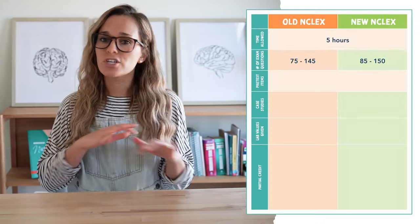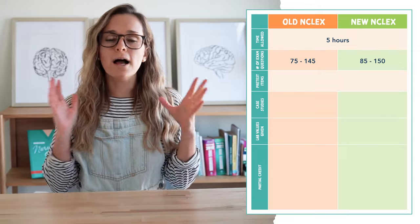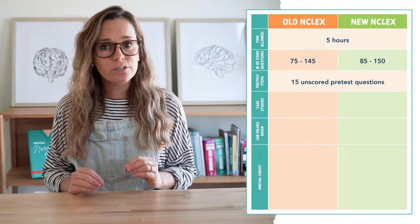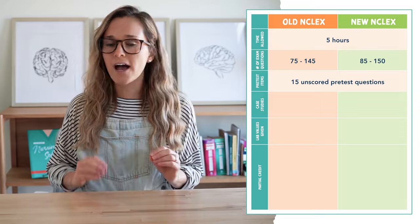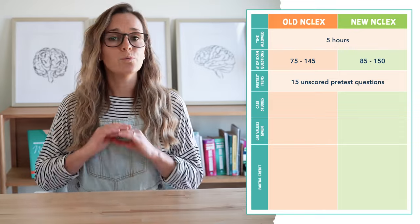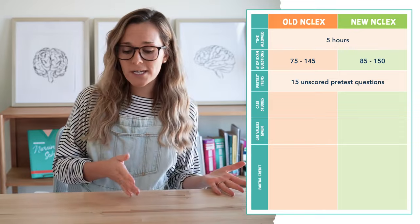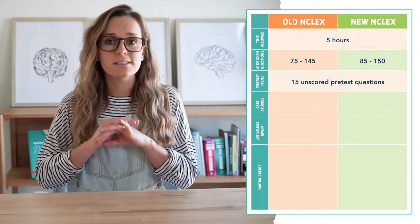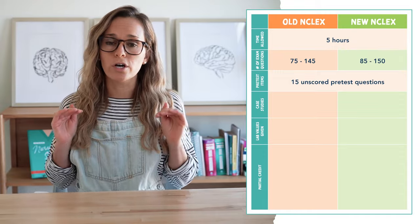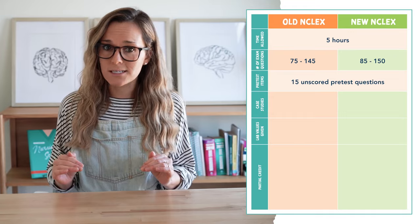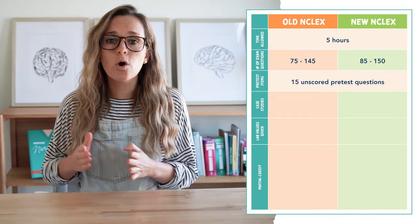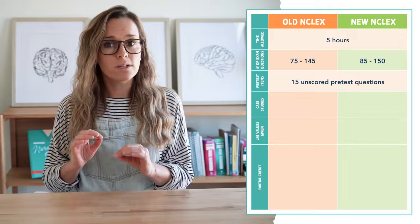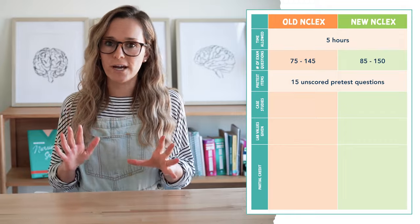Now for the pre-test items. Just like before, you will have 15 unscored pre-test items included within the 85 to 150 questions. You won't know which questions are the pre-test or unscored questions — they appear the same as normal scored questions. What this means is you need to take every single question on your exam seriously. Don't let this pre-test item thing get to your head.